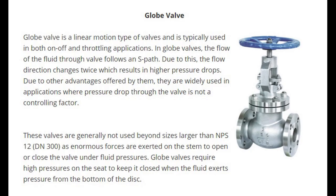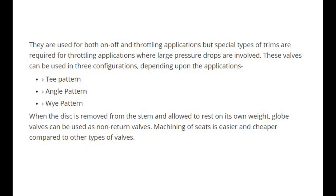Globe valve is a linear motion type of valve typically used in both on-off and throttling applications. In globe valves, the flow follows an S-path, so the flow direction changes twice, resulting in higher pressure drops. Due to other advantages, they are widely used where pressure drop is not a controlling factor. They are generally not used beyond NPS 12 (DN 300), as enormous forces are exerted on the stem to open or close the valve under fluid pressures. Special types of trims are required for throttling applications where large pressure drops are involved.